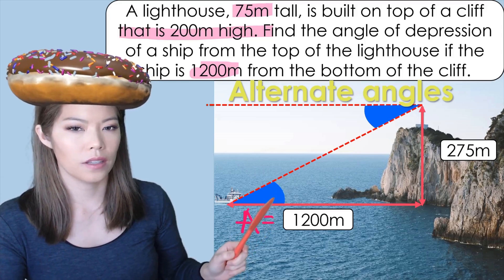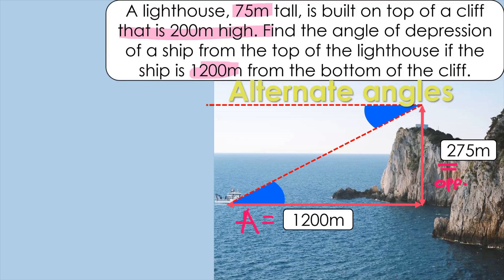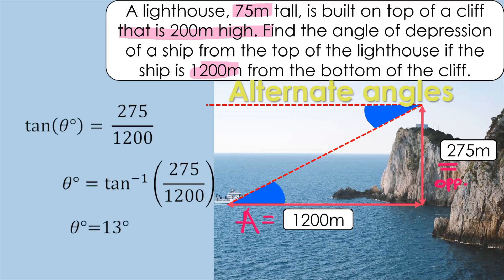So again this would be adjacent to this angle and that side would be opposite. We're going to use tan again. So tan of theta the missing angle will be opposite 275 over 1200. To get rid of tan on the left side we find the inverse of the other side. Plug that into the calculator and we have theta equals 13 degrees.